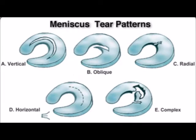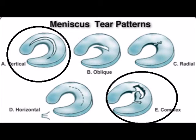When a meniscus tears, it can tear in a multitude of different patterns. It can also tear in different zones within the actual meniscus. Therefore, the pattern and location are very important for the surgeon when choosing to either trim a tear or do a repair. The two most common types of meniscus tears are the vertical tear and the complex tear. Treatment of vertical tears depends on whether or not the tear is within a vascularized area of the meniscus. Complex tears are usually treated with trimming, that is partial meniscectomy.